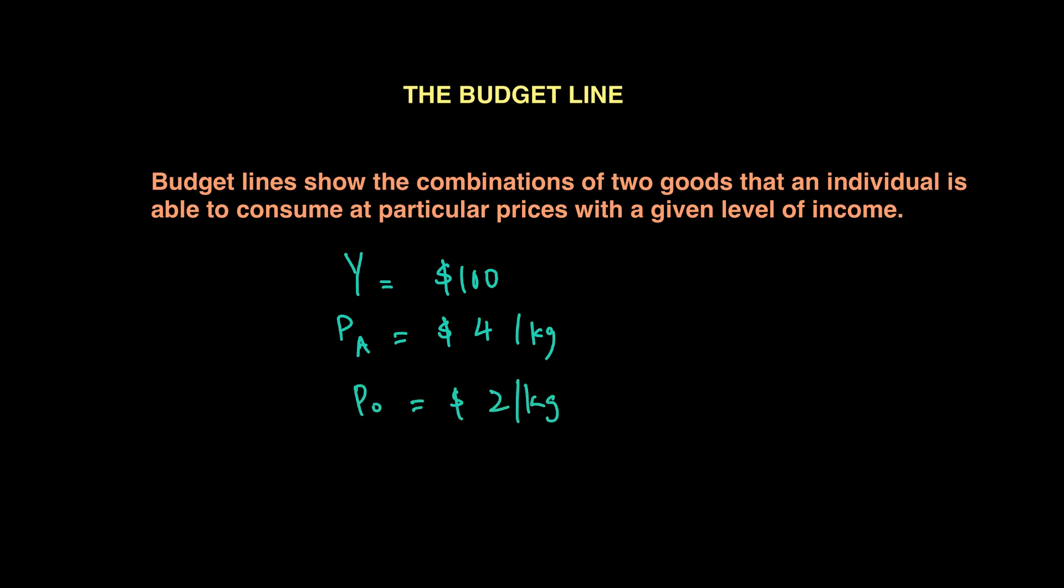While the price of oranges, PO, is $2 per kg. If he decides to buy only apples, the amount he can buy will be simply income Y over price of apples PA, or 100 over 4, which is 25 kgs of apples. On the other hand, if he's only buying oranges, it's Y over PO, or 100 over 2, which is 50 kgs.